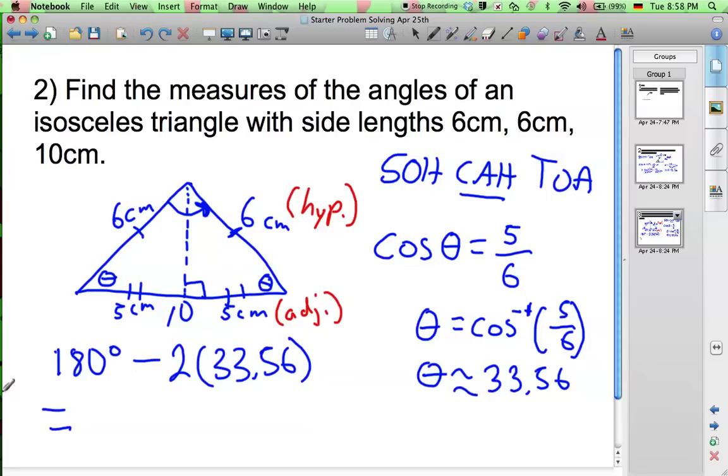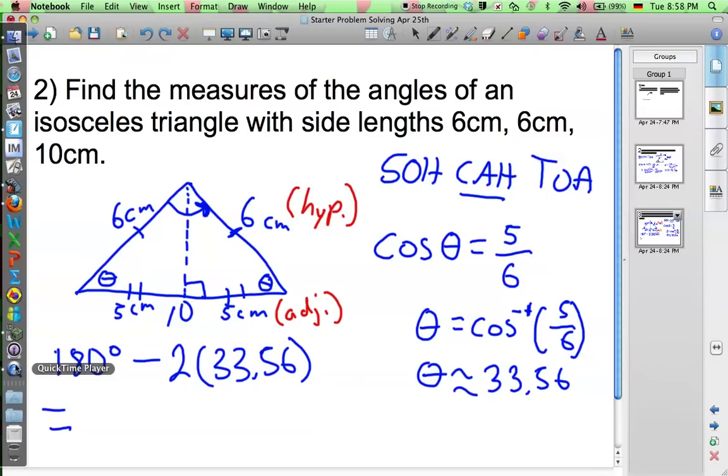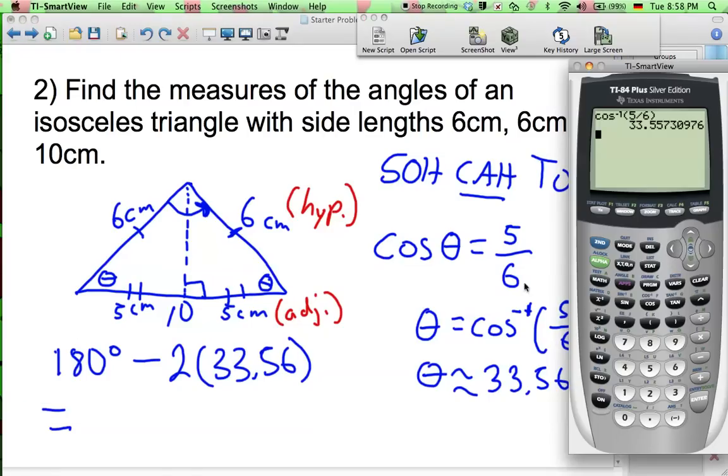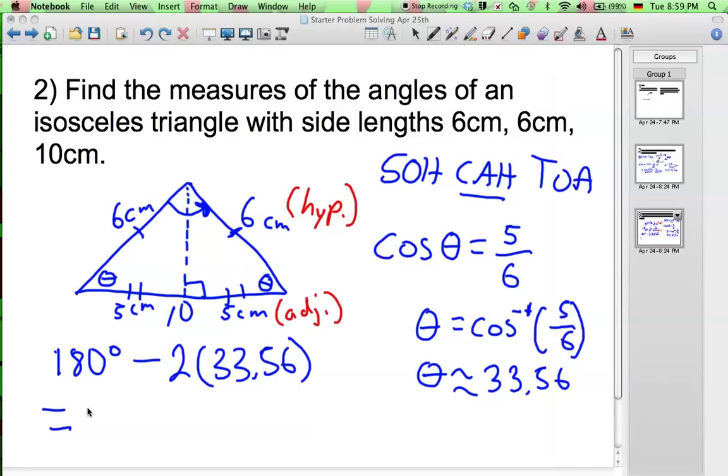Let's go ahead and do that here on the calculator. Let's do 180 take away two times the answer because that answer is still in our calculator. And we have 112.89, let's round it off to 112.89 since we used two decimal digits before.